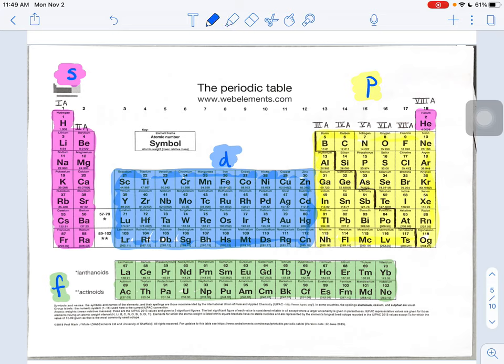I'm going to write some numbers next to the columns of the periodic table, right down the sides. I'm going to put some numbers here. 1, 2, 3, 4, 5, 6, 7.